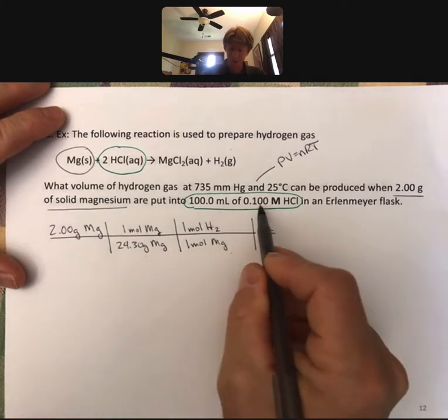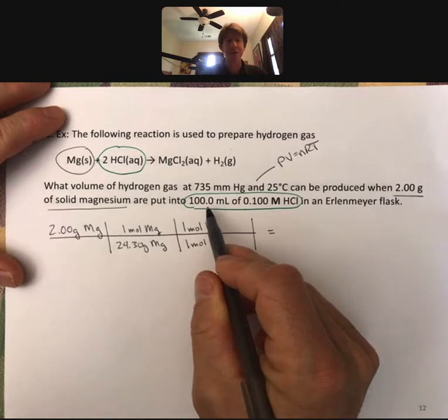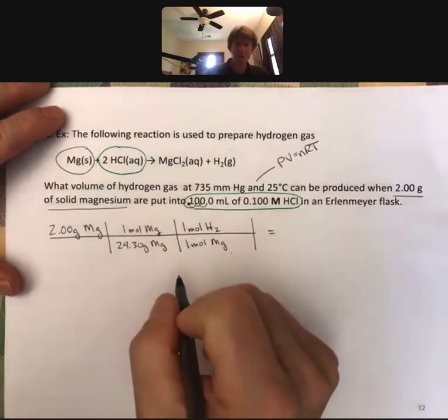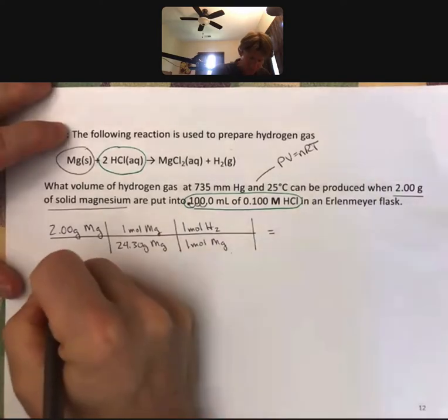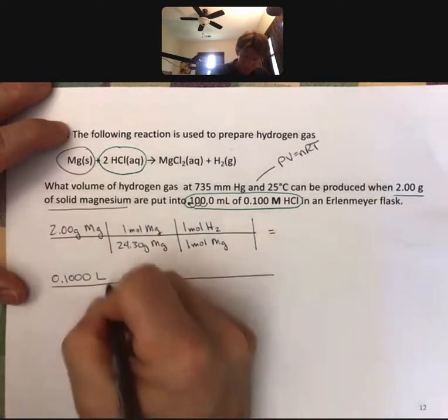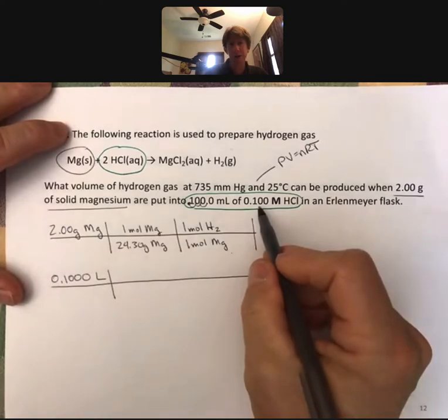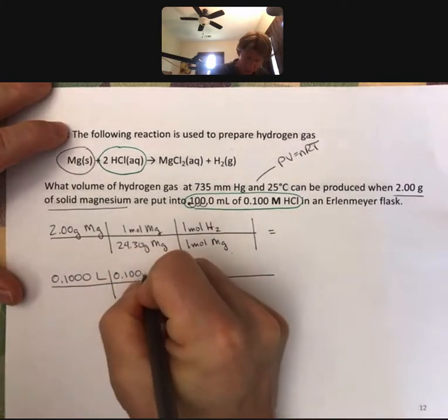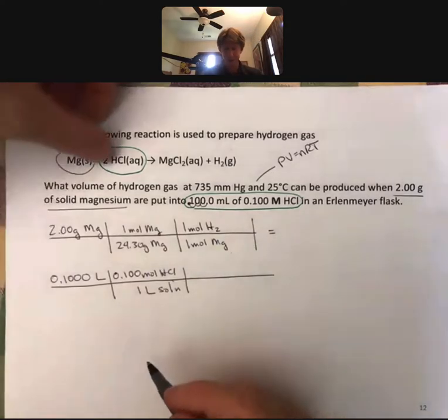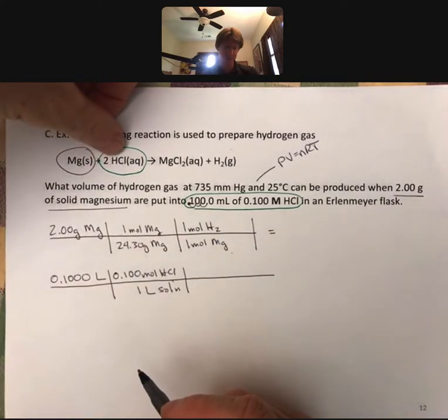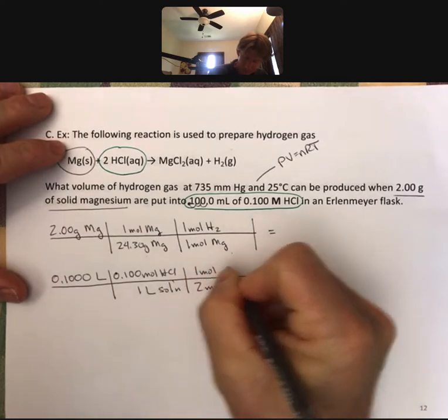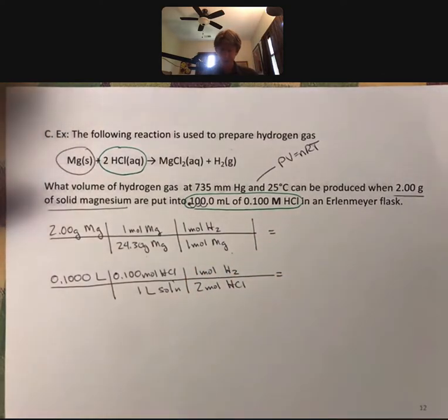Now let's start with our 100 milliliters, which, as we've just learned, we want to put into liters. So move the decimal point three places to the left. That will be 0.100 liters. Now our molarity is going to be unit conversion. We break that up: 0.100 moles of HCl per one liter of solution. And here our mole to mole conversion is going to need to be two moles of hydrochloric acid for every one mole of hydrogen.